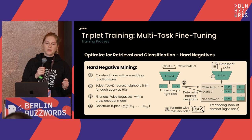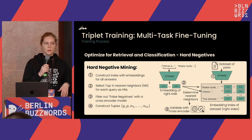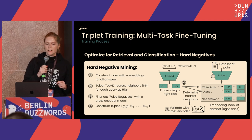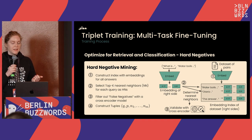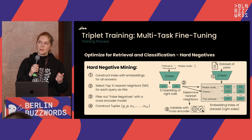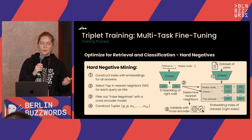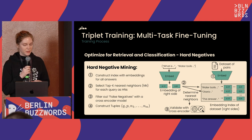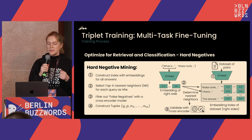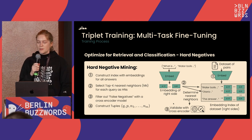To ensure these are properly hard negatives, we construct an index of all answer embeddings, take the top-k nearest neighbors for each query as candidate hard negatives, then filter out false negatives using a cross-encoder model. If the similarity between the query and a candidate is higher than a set threshold but it's not annotated as a positive, we treat it as a negative. We construct tuples of (query, positive, negative1...negativeM) — for our training we typically use 7 hard negatives.